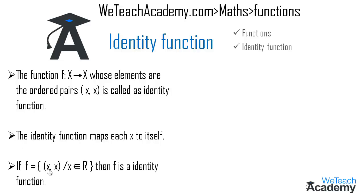If f = {(x, x) such that x belongs to R}, then f is said to be an identity function.